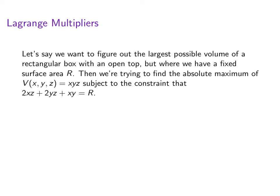Why is there not a 2xy? Well, there's no top to the box. It would be 2xy if it was a closed box. Then the lid and the base of the box would count as another xy. So we have 2xz + 2yz + xy = R. We're not going to solve this problem yet. We just want to discuss the method that we're going to use to solve this.